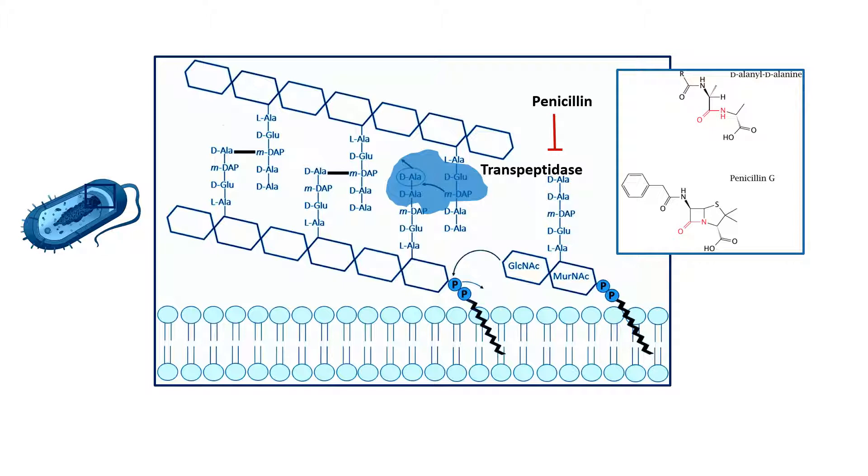This bond formation is catalyzed by transpeptidase. So penicillin, in short, interferes with transpeptidase action and thereby interferes with bacterial cell wall formation process.